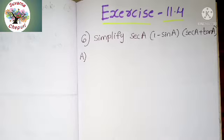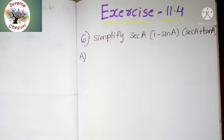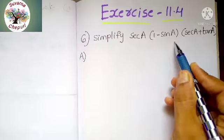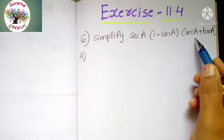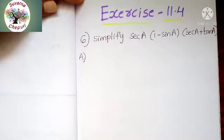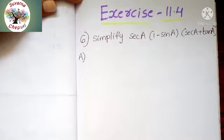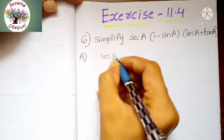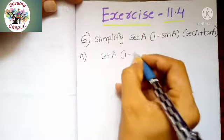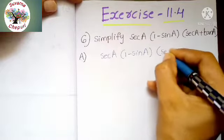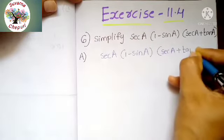See the sixth question. What is that one? Simplify secant A into 1 minus sin A into secant A plus tan A. How to simplify this one? By using trigonometry identities. First, write down the question: secant A into 1 minus sin A into secant A plus tan A.